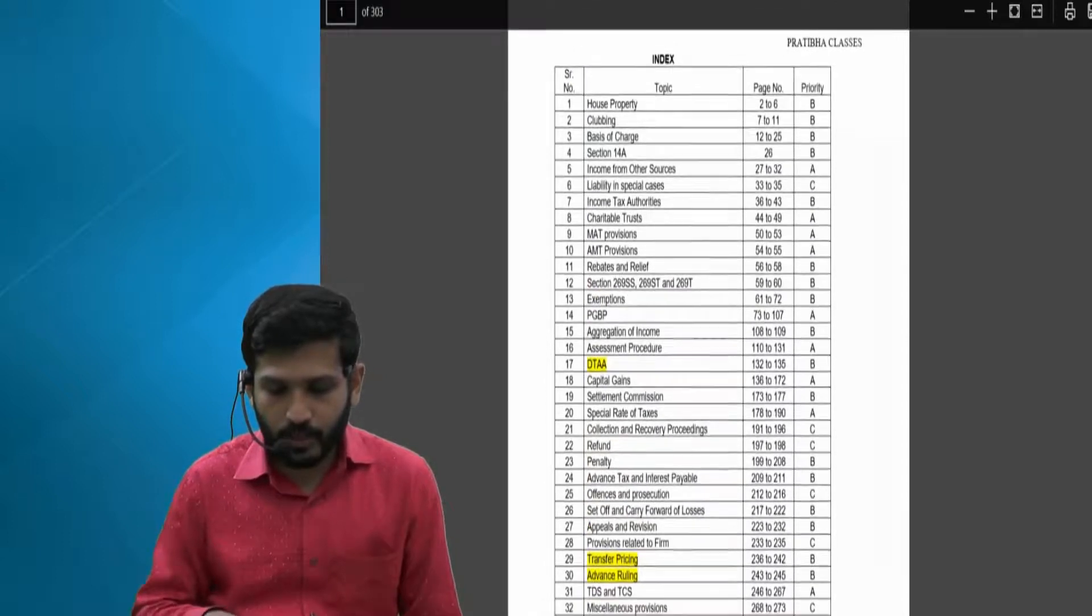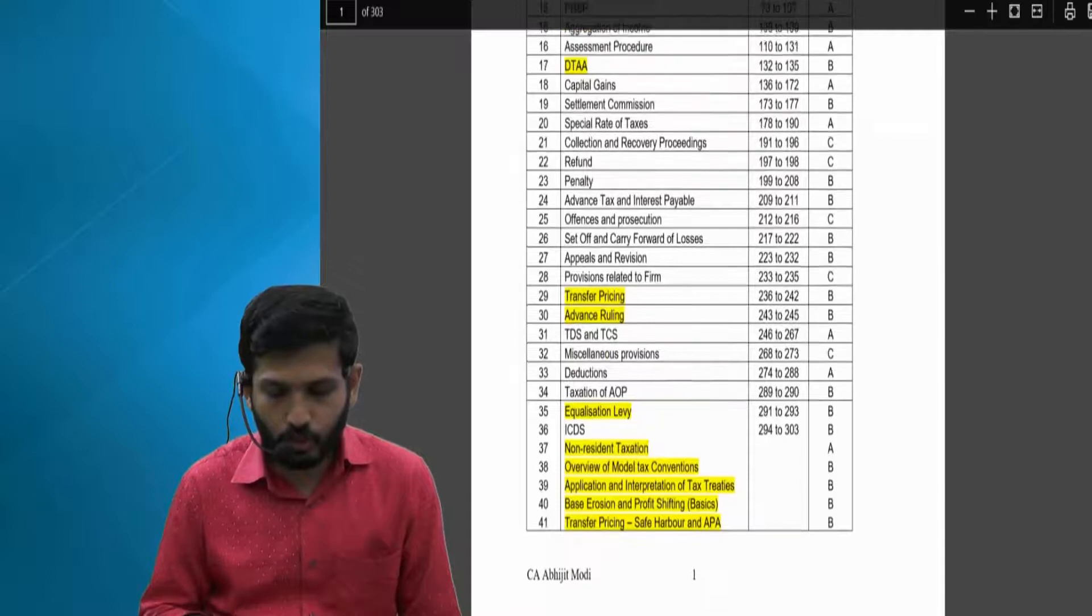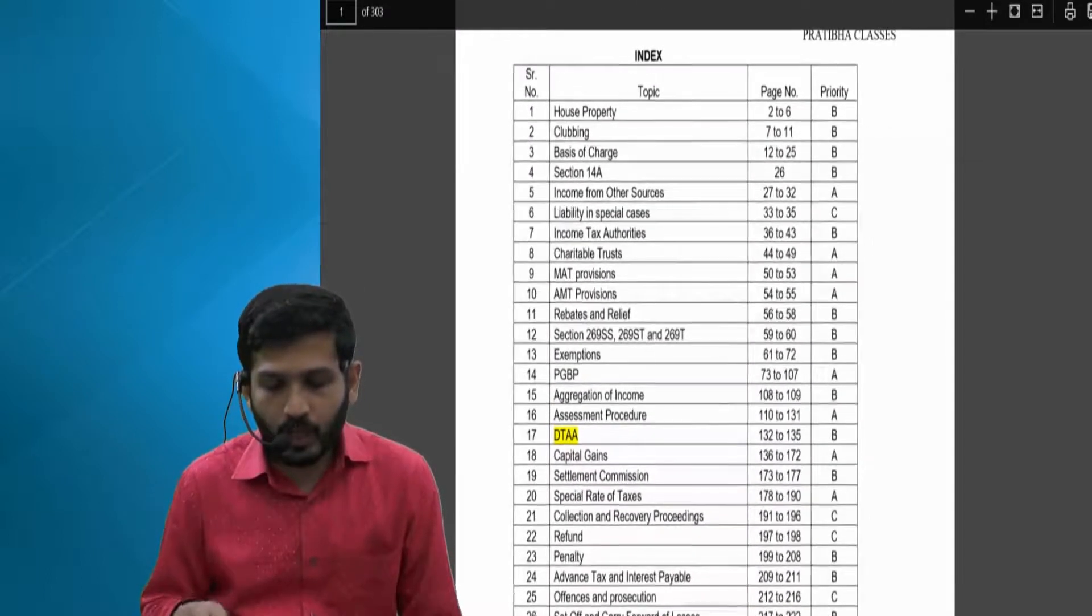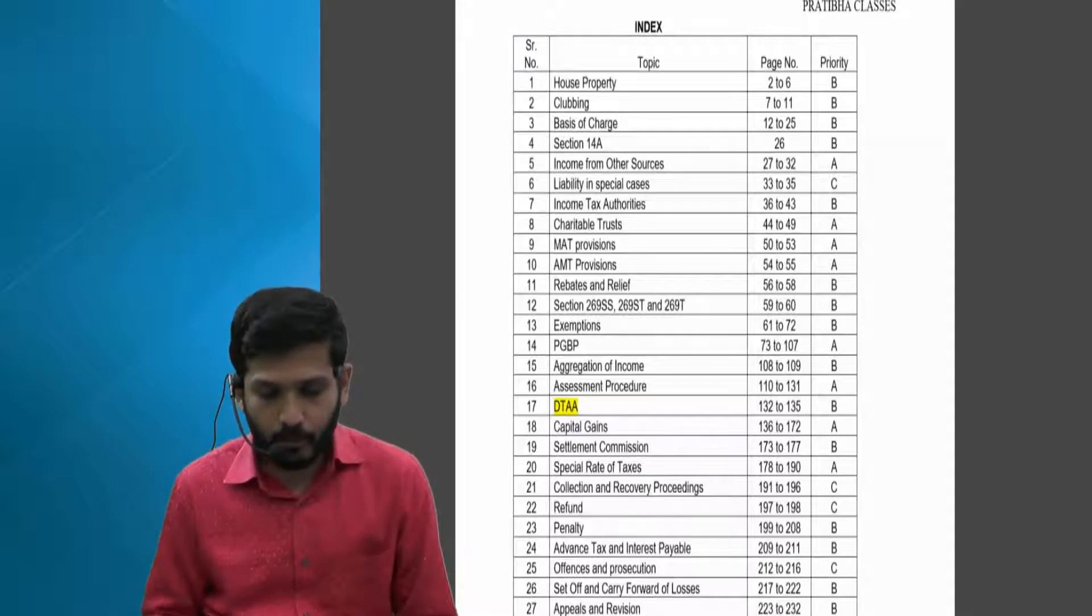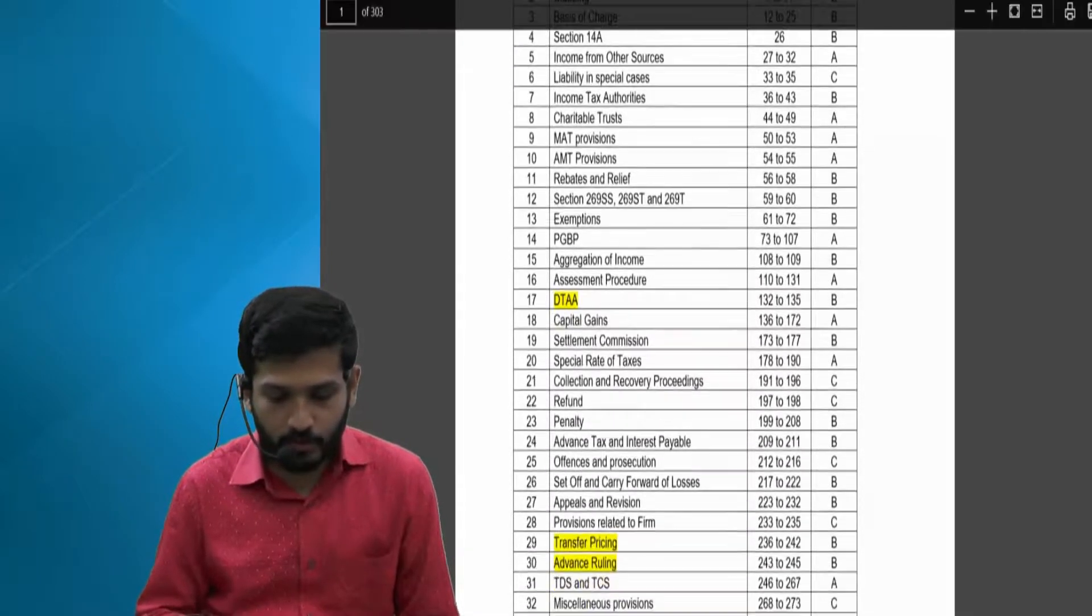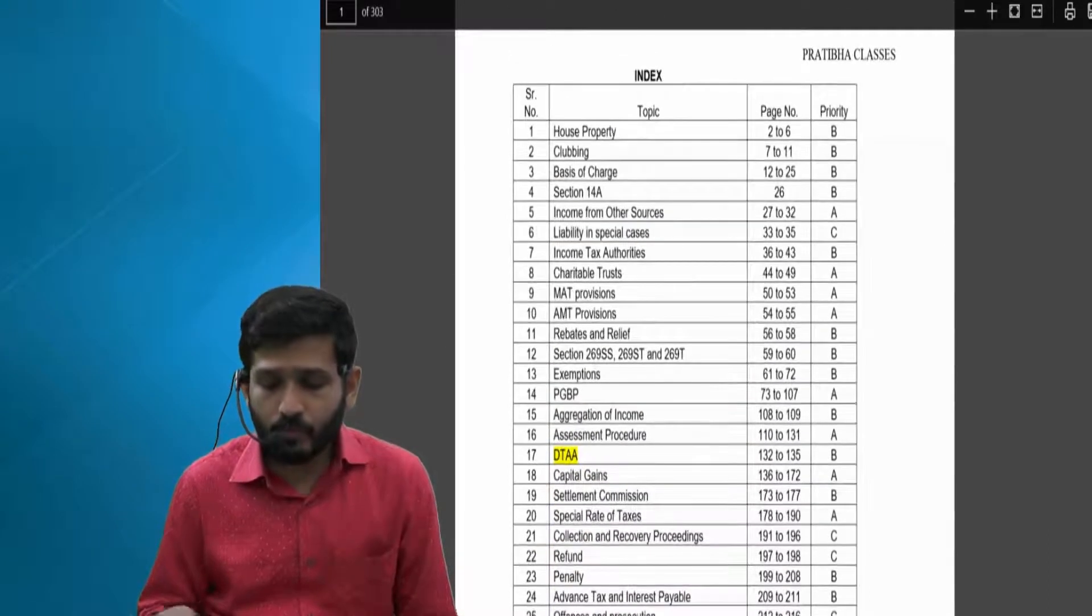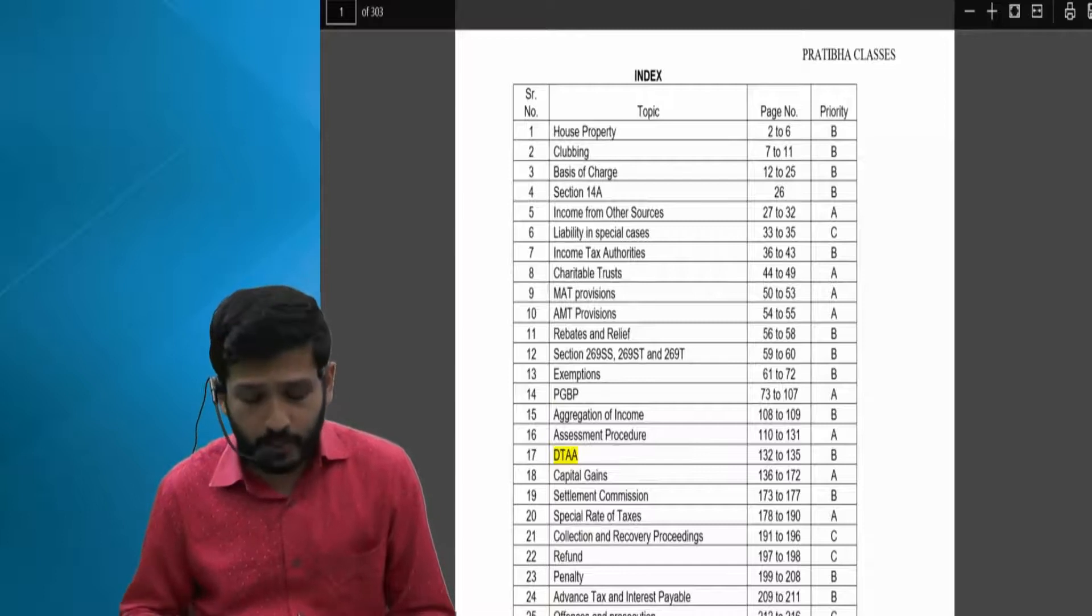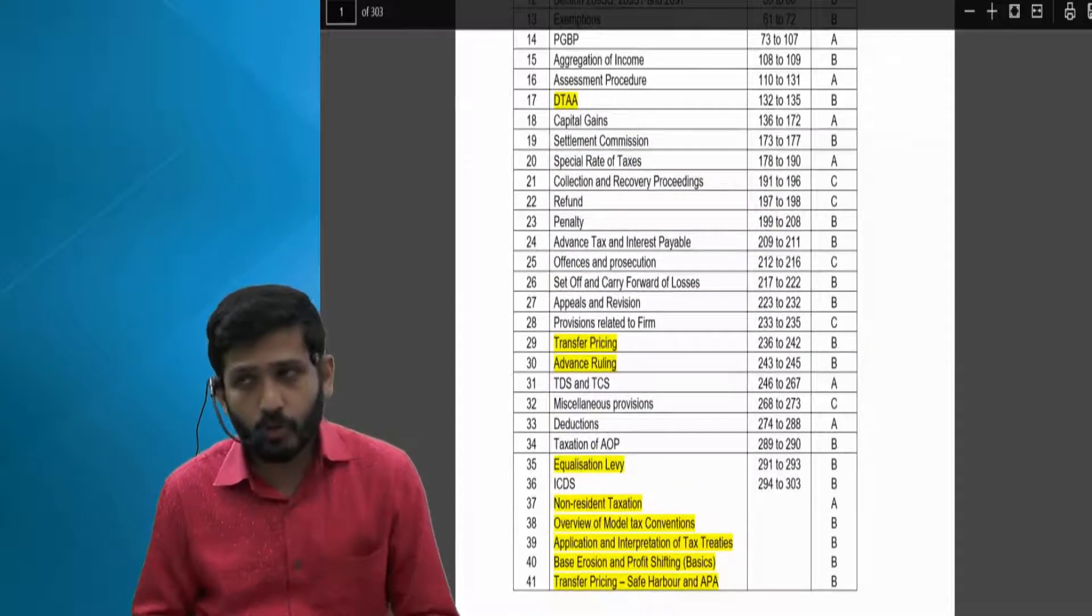So if we can divide this syllabus chapter-wise, then total 41 chapters, that is what we have to study basically. Now for this, every chapter I have tried to make an ABC analysis. That is, from your exam point of view, whatever is most relevant has been put into A category and whatever is least important has been put into C category.